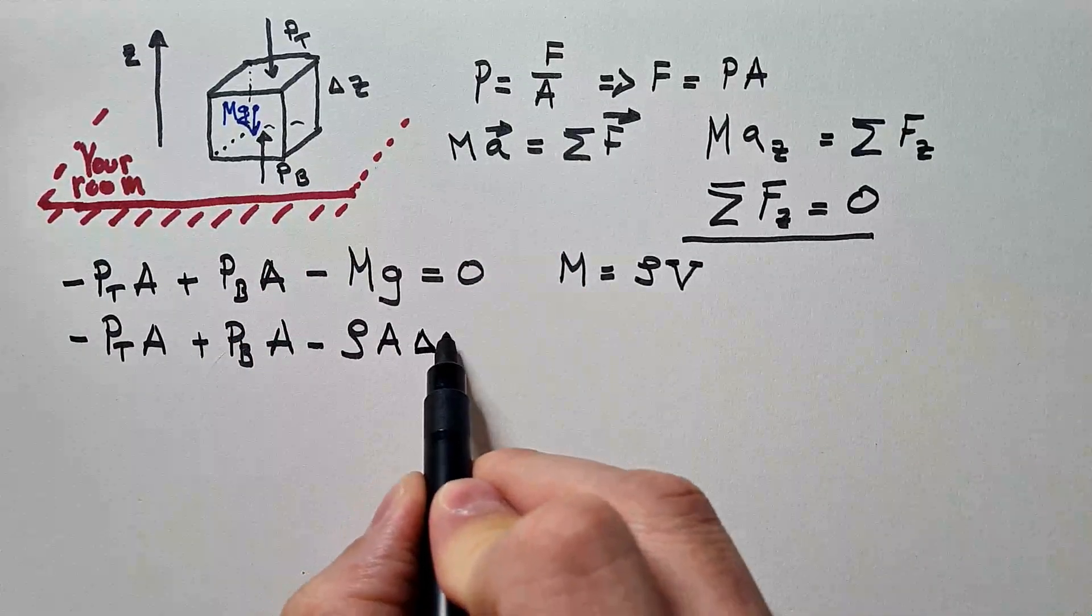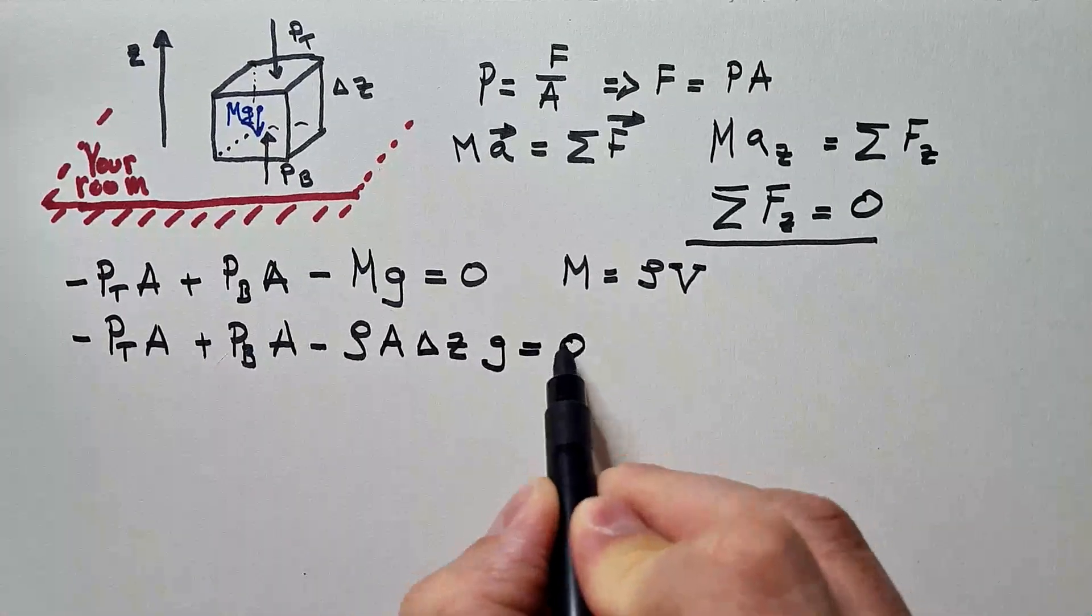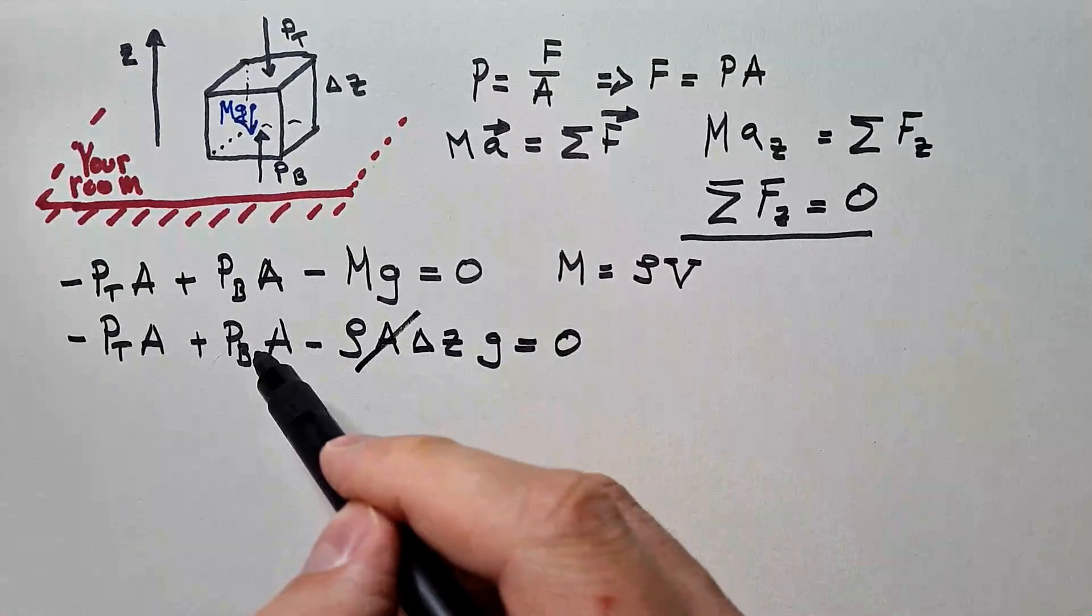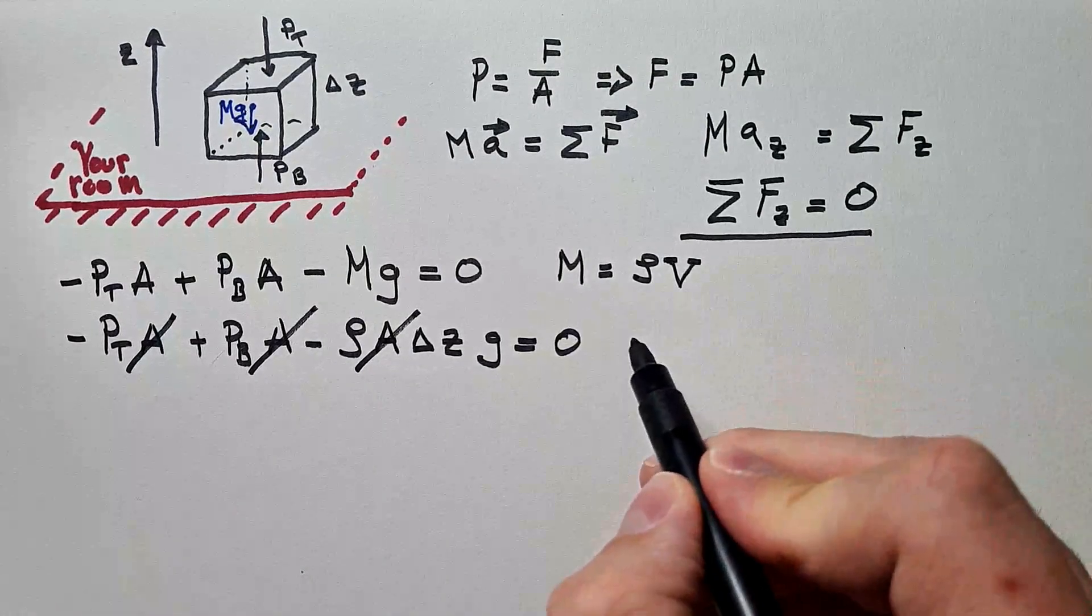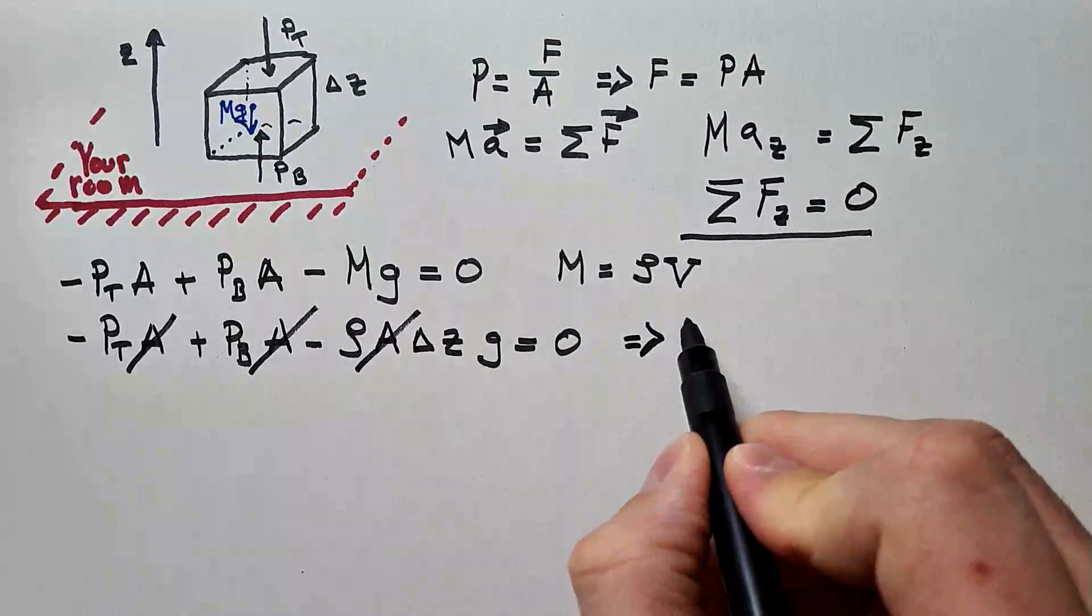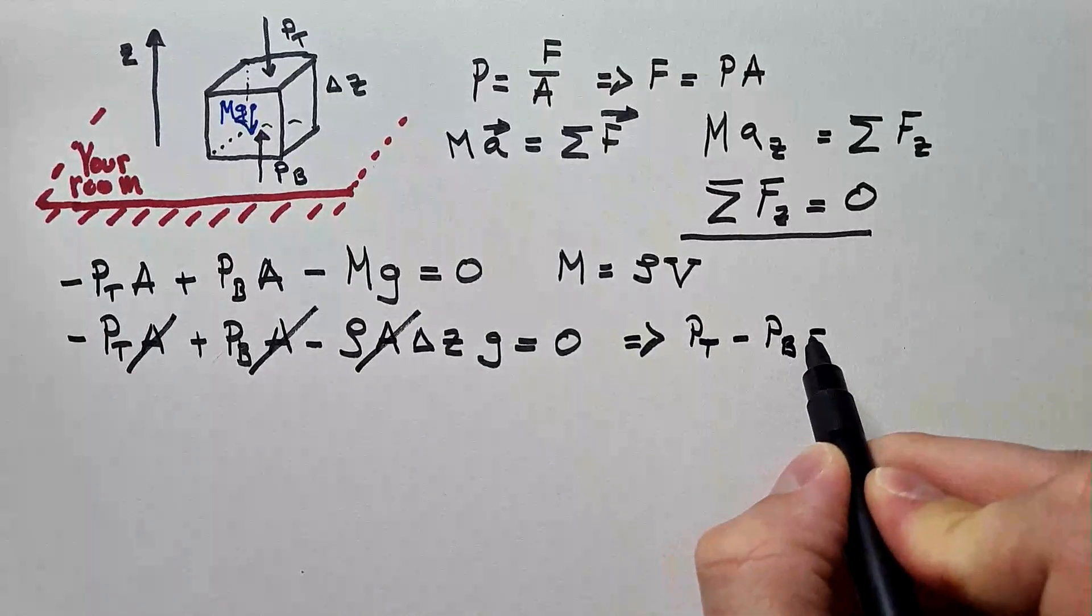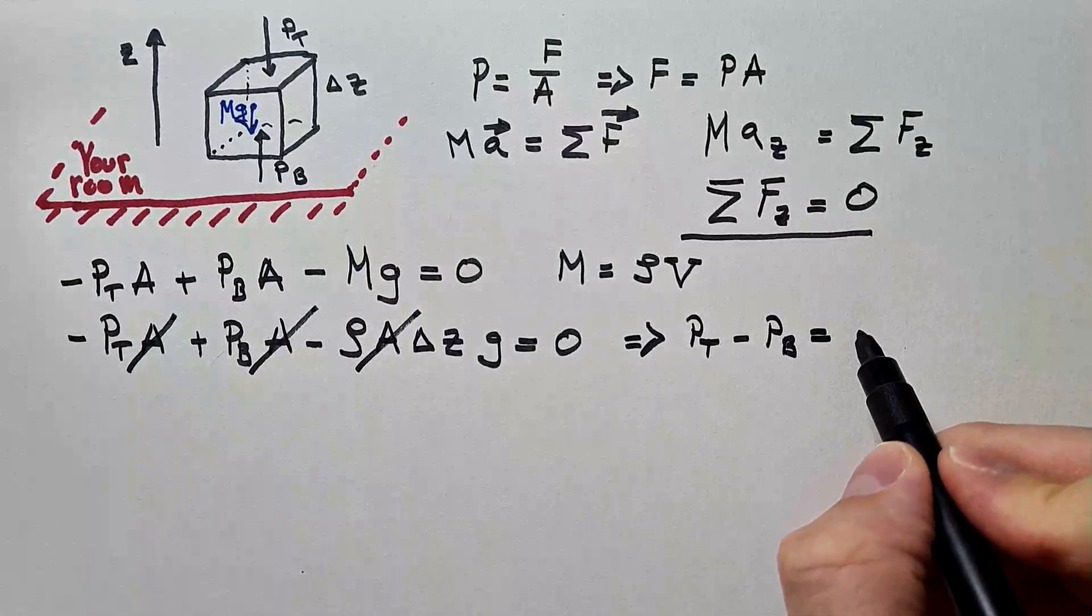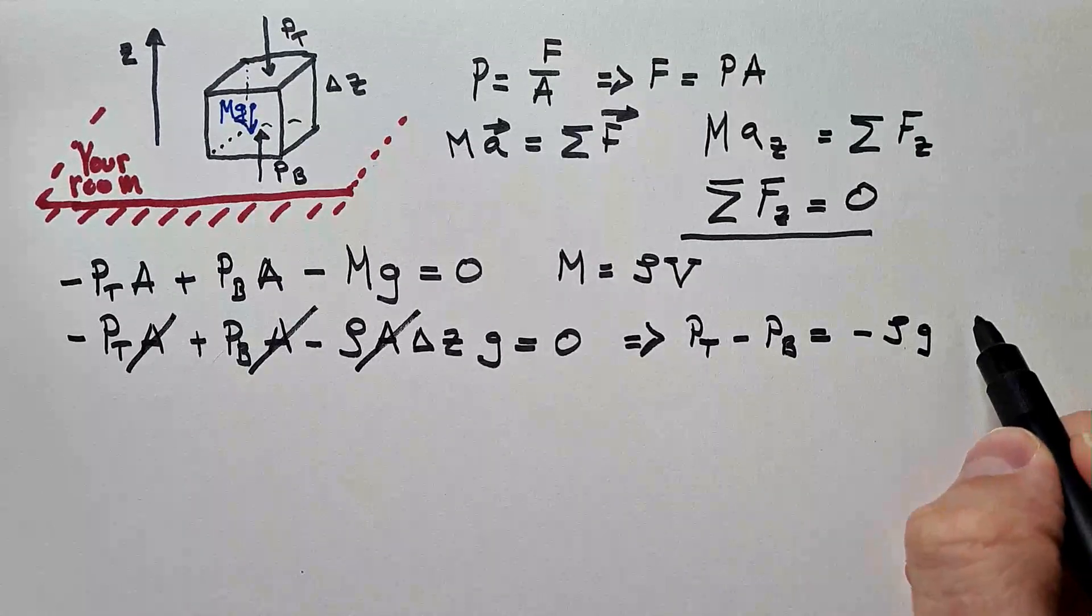But what is volume? Volume is the area of the side of this box times the height, delta z, times g, equals to zero. Now, you can see I can cancel area in all of these terms. And I will get that Pt minus Pb is equal to minus rho g delta z.